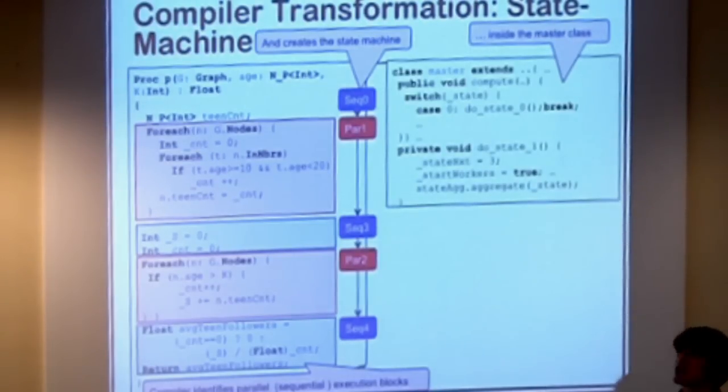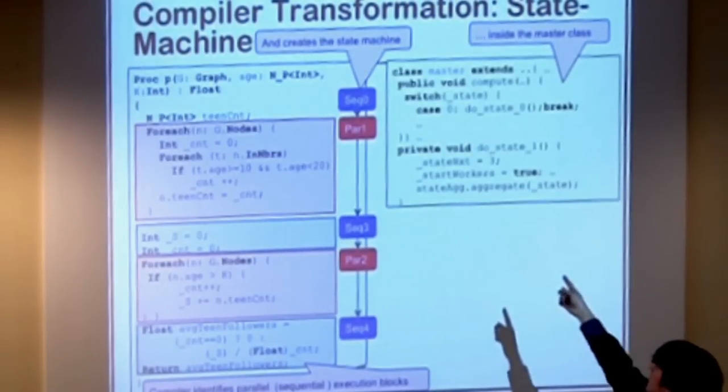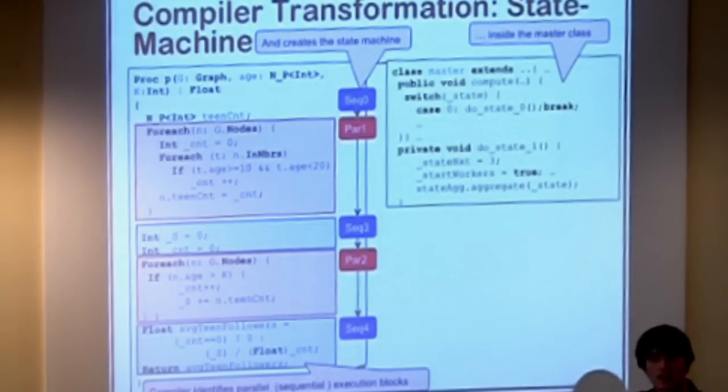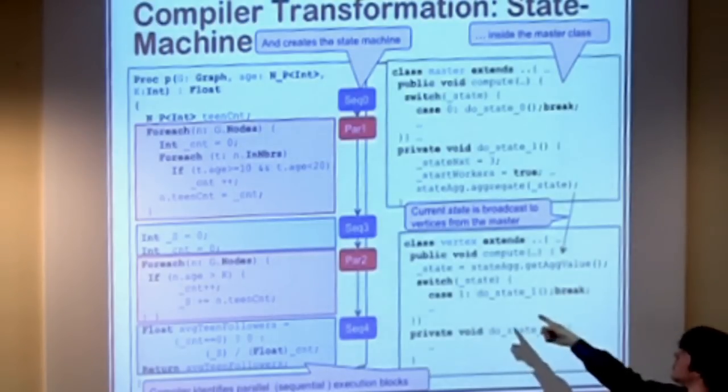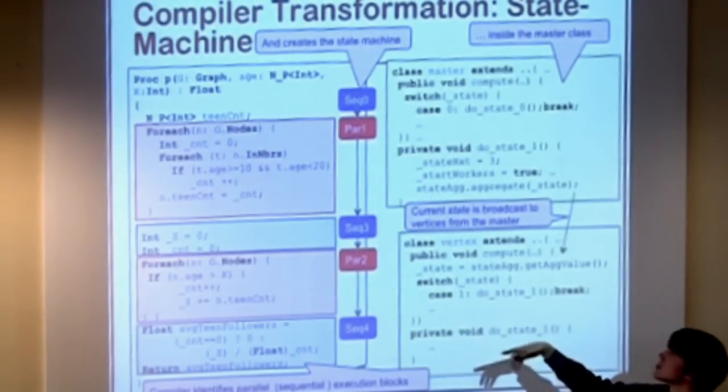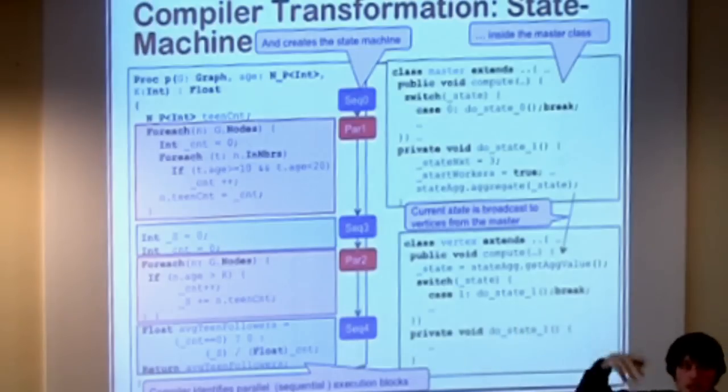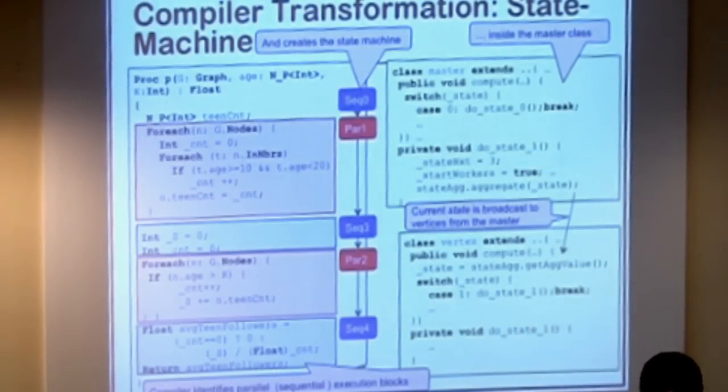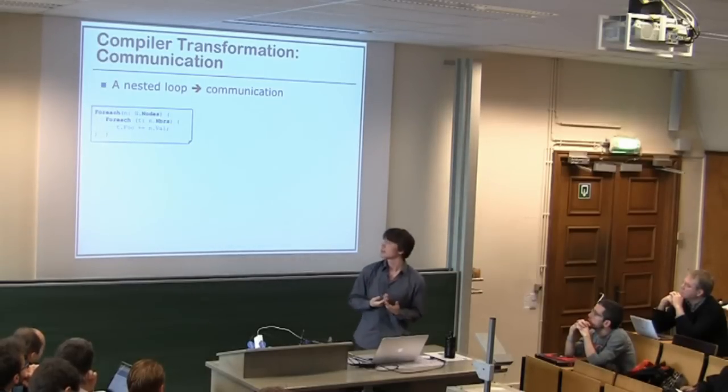We have the same program again. And the compiler will identify which blocks have to be executed for every vertex and which have to be executed once. Well, it's really easy in this case because everything that has to be executed for every vertex is in a for each statement for all the nodes. So that's those two blocks. And the other blocks have to be executed sequentially. So initializing of some variables and a reduction of those variables. Then it creates a state machine based on those steps. So it knows that first we have to initialize our program. Then we have to execute something for the vertices and sequential part. And it connects all those steps together. And it puts the state machine into the master compute. So it's basically one big switch statement with a state. And the state, as you can see, is put in an aggregator. And when the control is handed to the vertices, the vertices can read this aggregator. And they know which state they have to execute. So state 1 and 2 will be in the vertex. And state 0, 3 and 4 will be in the master. Actually, 1 and 2 will also be in the master. But that will just contain a give control to the vertices.